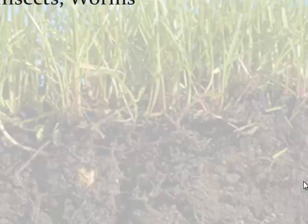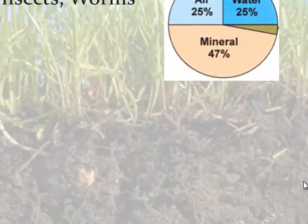The first thing we want to look at is what makes up a healthy soil. Let's look at the definition of soil. Soil is basically mineral fragments, humus, air, water, and living things such as plant roots, insects, and worms. If you looked at this little pie graph, it shows you about 47% is made up of minerals, air and water make up about 25% of soil, and then that remaining little bit is the humus.